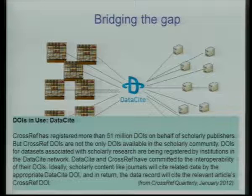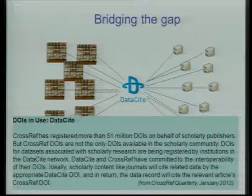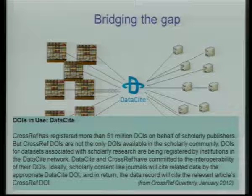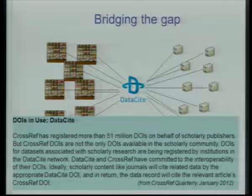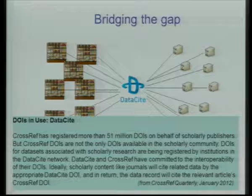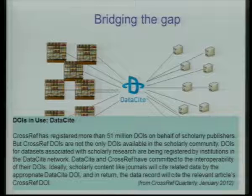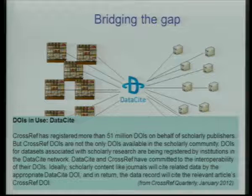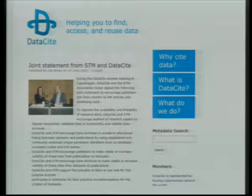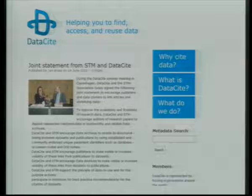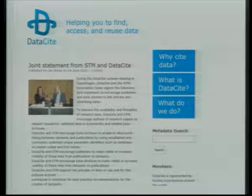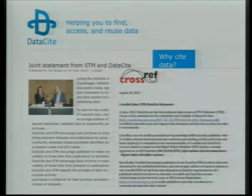There is a formal agreement with Crossref, who assigned the DOIs for journal articles. DataCite and Crossref have committed to the interoperability of DOIs, and there should be bidirectional linking between articles and data. This was formalized last year by a formal statement between STM — the Publishers Association — and DataCite on best practices on making data available and on how to cite data. This statement was then also joined by Crossref.